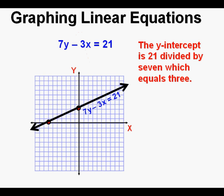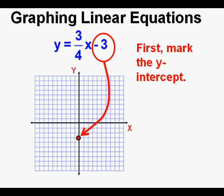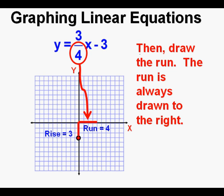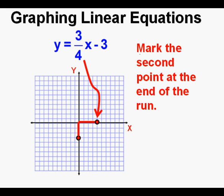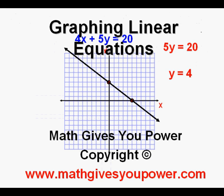To review graphing in slope-intercept form — with y by itself on one side — mark the y-intercept first on the y-axis; here it's at y equals negative 3. Look at the numerator of the slope in front of the x-term and go up or down from the y-intercept. Since this is 3, we go up 3. Then look at the denominator and go to the right that many units — the run is always to the right. We go four units to the right, mark the second point, and draw the line. This has been graphing linear equations from standard form and slope-intercept form.